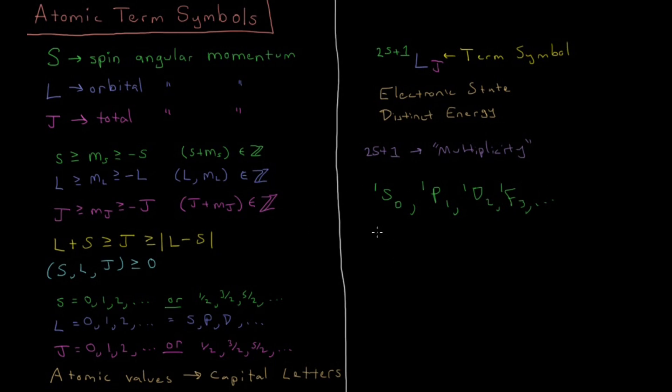Then I can have what are called doublets. I could have doublet s, then the only value allowed for j would be 1 half, if you follow these rules here. I could have doublet p, and then doublet p, s is 1 half, l is 1. So when s is 1 half and l is 1, I can have the value of j, which is either 3 halves or 1 half.